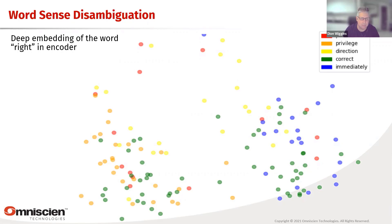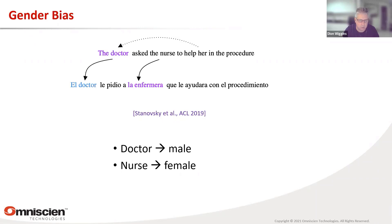Then there's gender bias. For example: 'The doctor asked the nurse to help her in the procedure.' Statistically, most doctors in training data are male and most nurses are female, so the data teaches the engine the same. It could be that the doctor is actually female and the nurses are male, but statistically there is bias built into the models. This is quite a hard problem to solve. But by having more information around — and as you can see, 'her' is actually in the sentence, identifying a female doctor — we can start to learn some of those things with new technologies.